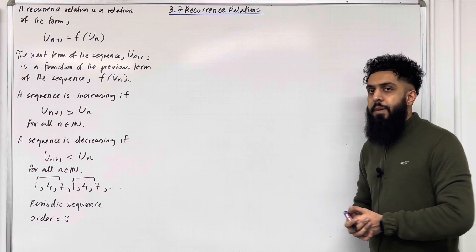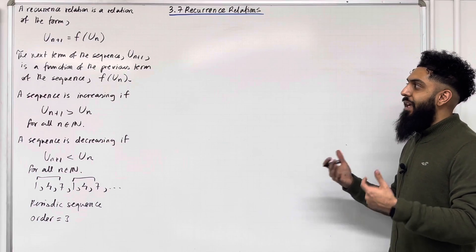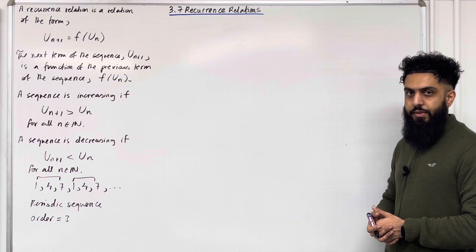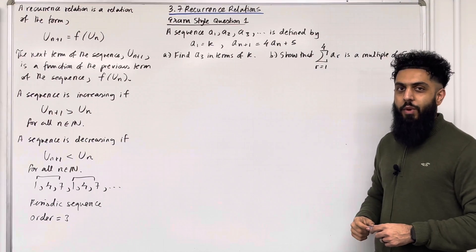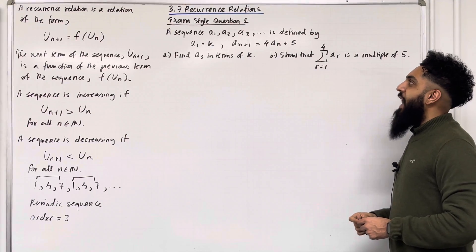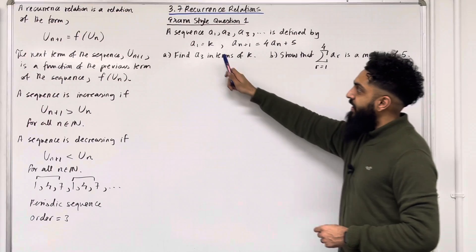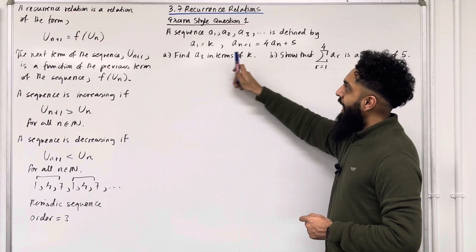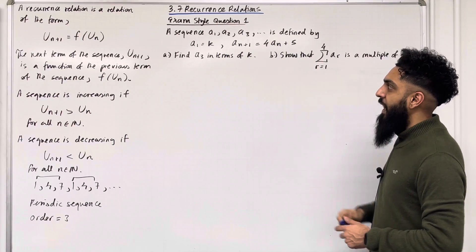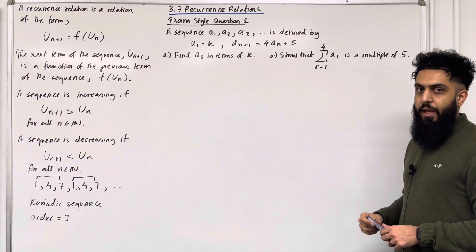These are all the key facts of 3.7 Recurrence Relations. I'll be implementing these key facts within exam style questions. Here's exam style question 1. A sequence a1, a2, a3, ... is defined by a1 = k, and a_(N+1) = 4a_N + 5. Part A: find a3 in terms of k.